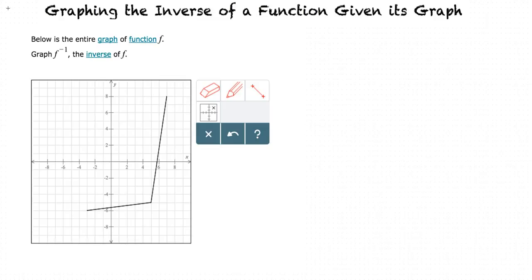Let's first find some points and create a table. One column will have points for the original function, and the other column will have points of the inverse based on the point for the original function.